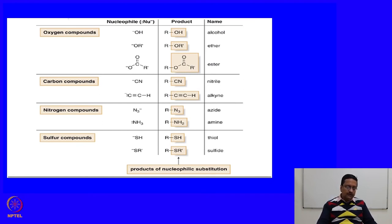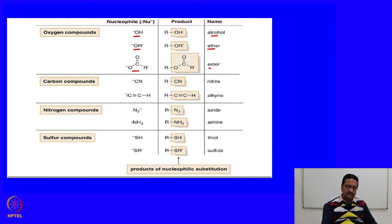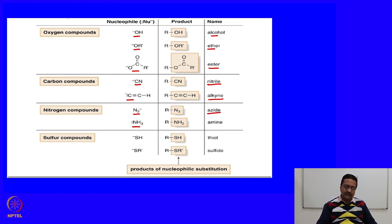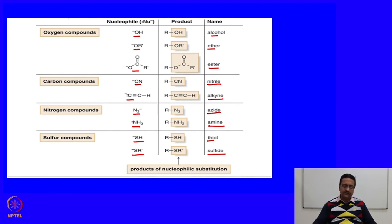This table shows different types of nucleophiles — oxygen-containing, carbon-based, nitrogen-based, and sulfur-based compounds — and their products in nucleophilic substitution reactions. Oxygen nucleophiles give alcohols, ethers, or esters. Carbon nucleophiles such as cyanide or acetylide give nitriles and alkynes. Nitrogen nucleophiles such as azide and ammonia give alkyl azides or amines. Sulfur nucleophiles such as SH and SR give thiols or thioethers.